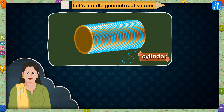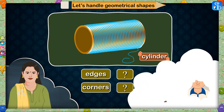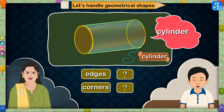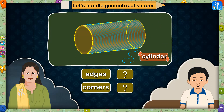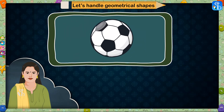What does the third picture represent? How many edges and corners are there? This is a cylinder. It has got two edges but no corners. That's right! So we will write two edges and zero corners against the third shape in this chart.